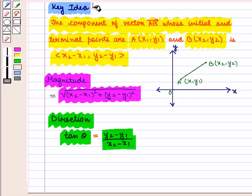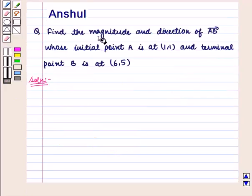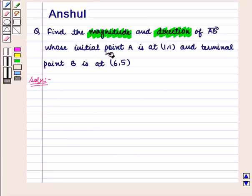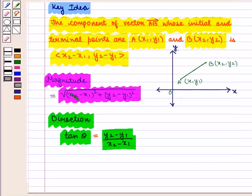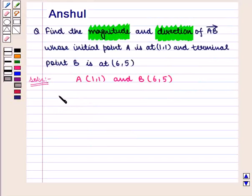With this key idea, we shall proceed to the solution. In this question, we have to find the magnitude and direction of vector AB whose initial and terminal points are given. Using the formula of magnitude given in the key idea, we find the magnitude of vector AB.